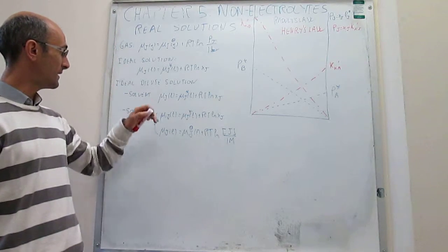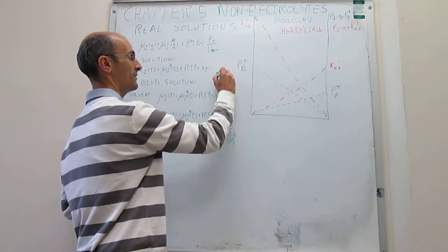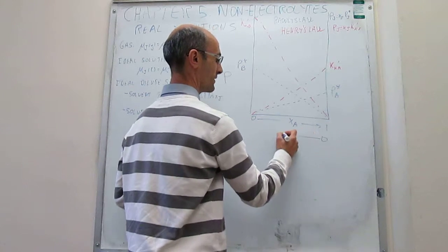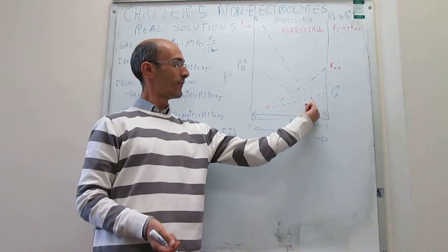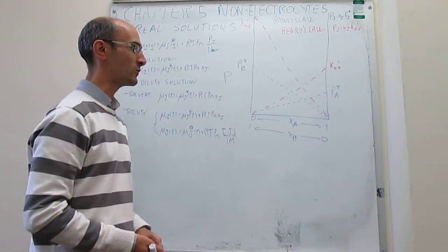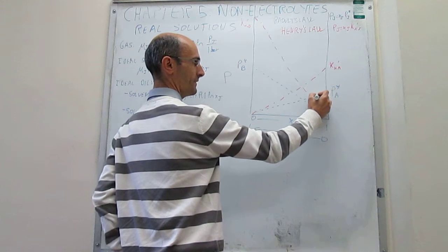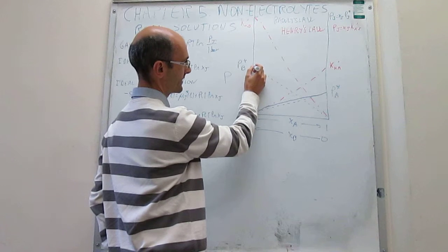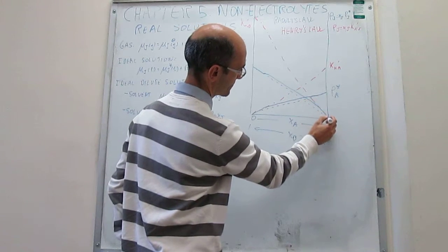To recap the last video on ideal dilute solutions: we have here the diagram to plot vapor pressures P as a function of molar fractions of A and B. We can show here what Raoult's Law and Henry's Law are for A, and Raoult's Law and Henry's Law for B, and then show how the actual vapor pressures would look like. For A, you satisfy Raoult's Law at high concentrations and then Henry's Law at low concentrations. For B it would be exactly the same thing — Raoult's Law at high concentrations, deviation, and eventually Henry's Law at low concentrations.